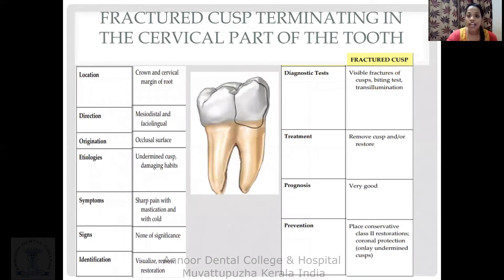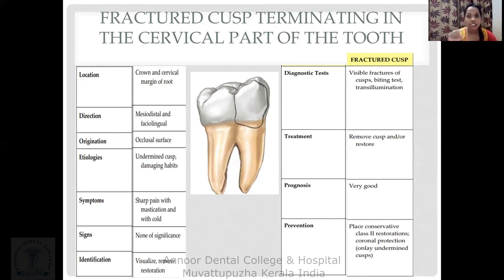The second condition is a fractured cusp terminating in the cervical part of the tooth, not restricted to the crown alone. This type of fracture can extend mesiodistally or faciolingually, often occurring when caries have undermined a cusp and adequate cuspal coverage was not provided, or due to parafunctional habits. The patient presents with sharp pain especially on mastication or on cold stimuli due to exposed dentin.